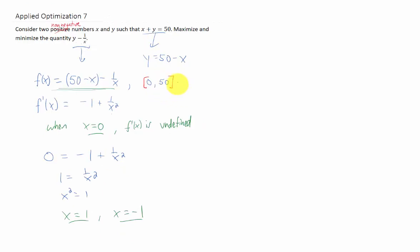And now that we've completed our interval, we should point out that x equals negative 1 doesn't fall on that interval. So we're simply going to test the critical point 0, 1, and also our endpoints by plugging those x values into our function and seeing what happens.